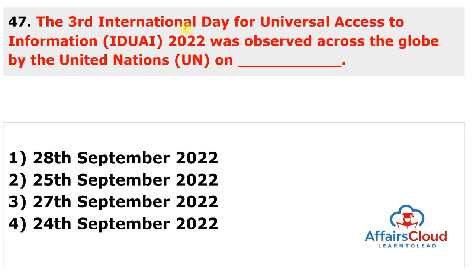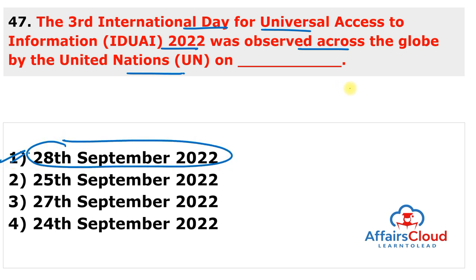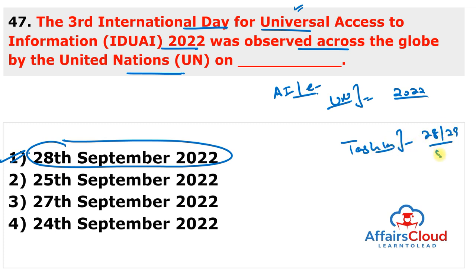The third International Day for Universal Access to Information 2022 was observed on 28th September 2022 by the United Nations. A global conference was arranged, including a seminar on 'Artificial Intelligence, E-Governance and Access to Information,' held in Tashkent, Uzbekistan on 28th and 29th September 2022. Access to information is recognized as a fundamental right of freedom of expression under Article 19 of the Universal Declaration of Human Rights, passed in 1948.